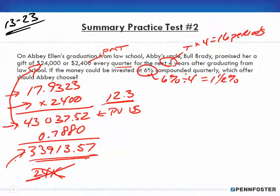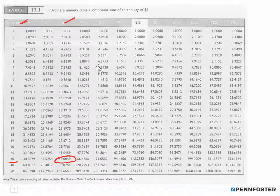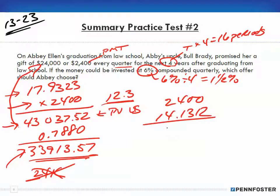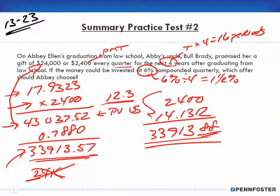Alternatively, we can look up the ordinary annuity present value table directly. We look up that factor and find 14.1312. We end up with $33,913.88 — off slightly due to rounding. So that's the present value of an annuity approach. Again, go back and watch problem 13-23; that's the exact same problem and I go over it a couple of times.